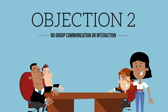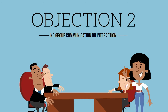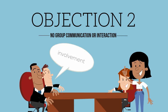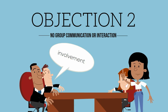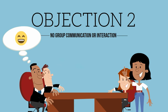Objection number 2: No group communication or interaction. Risk management means communicating about risks. Involve all stakeholders to be a part of the risk management process and raise the risk awareness of the entire organization. Therefore, making sure stakeholders take responsibility and action. There is no way you can achieve this with Excel.